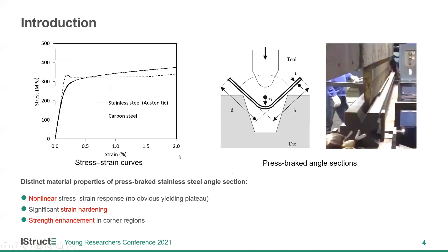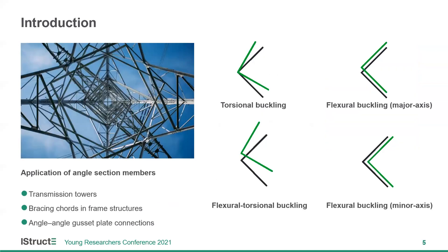This figure shows the stress-strain curves of stainless steel and carbon steel. Stainless steel displays a non-linear stress-strain response with no clearly defined yield point, but a higher level of strain hardening. Moreover, the angle sections I studied are made by press breaking, so there will be strong enhancements in the corner region. Angle sections have very simple cross-section shapes, so they have been widely applied in structural engineering, such as transmission towers.